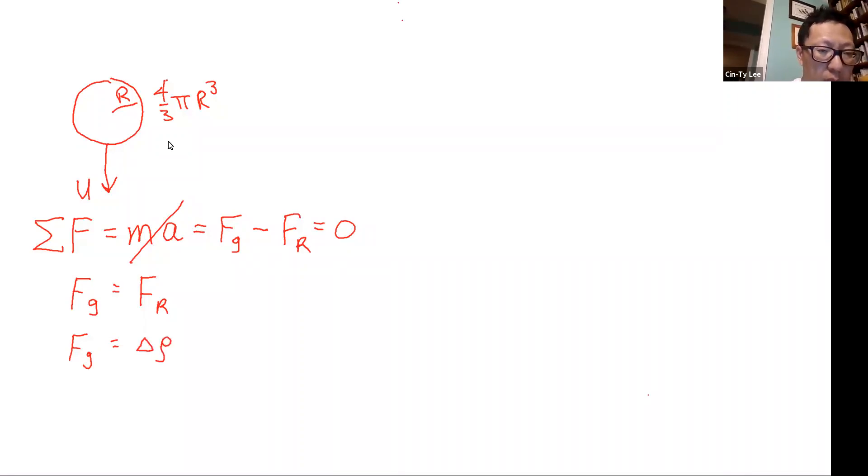Delta rho up here is the density of my sphere minus the density of my fluid. This is the sphere and this is the fluid. And then delta rho is the difference between the two. And if you multiply that by g.